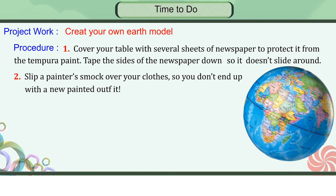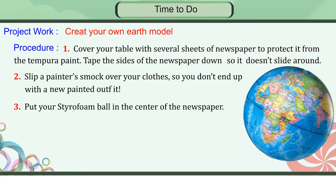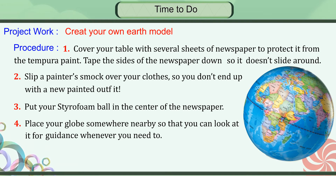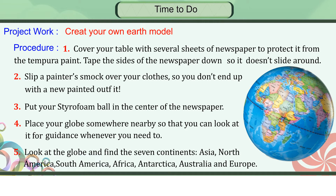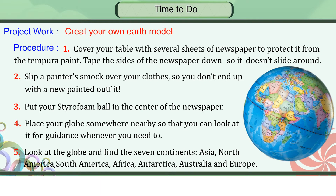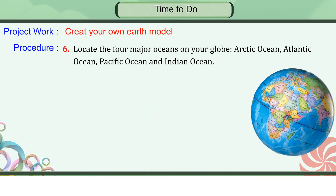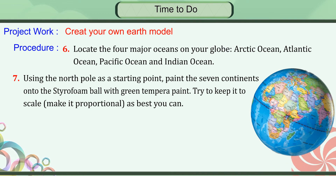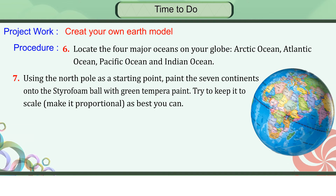The seven continents are Asia, North America, South America, Africa, Antarctica, Australia, and Europe. Locate the four major oceans on your globe: Arctic Ocean, Atlantic Ocean, Pacific Ocean, and Indian Ocean. Using the North Pole as a starting point, paint the seven continents onto the styrofoam ball with green tempera paint. Try to keep it to scale and make it as proportional as you can. Paint the rest of the styrofoam ball with blue tempera paint — other than the seven continents, the Earth is filled with water. Set your styrofoam ball aside to dry.